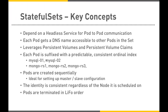Each pod in a StatefulSet gets a DNS name accessible to other pods in the set. The slave precisely knows the master's DNS name — it won't change. In normal replica sets or pod deployments, it's very hard to map the pod name to an IP address and you never know what DNS name the pod will get. In a StatefulSet, every pod gets a predictable FQDN resolved at runtime, so all cluster members can easily discover and talk to each other.